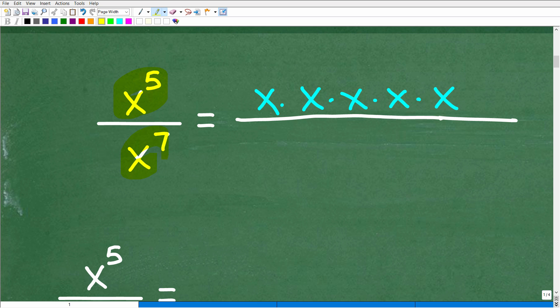And then x to the seventh means we have x being multiplied by itself seven times. So let's write that down here. One, two, three, four, five, six, seven. This is what we would call the expanded form of a power.